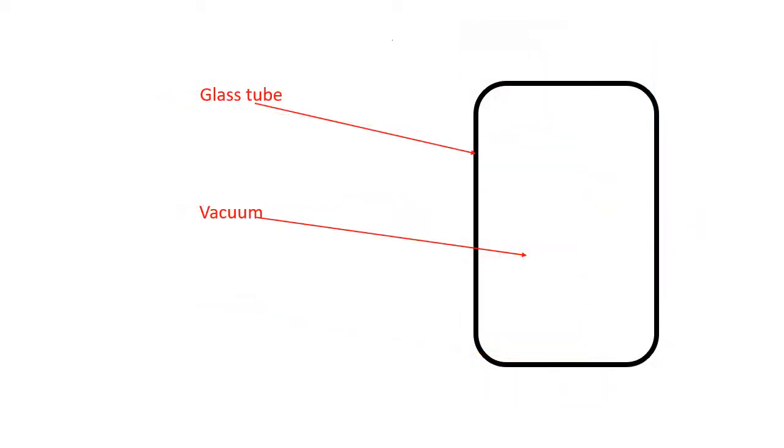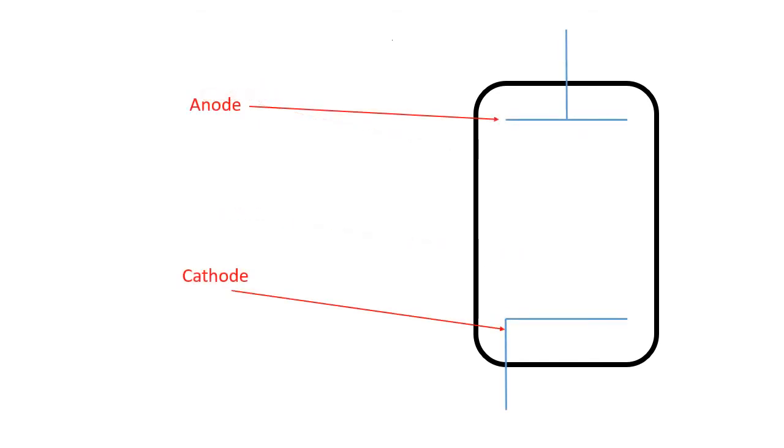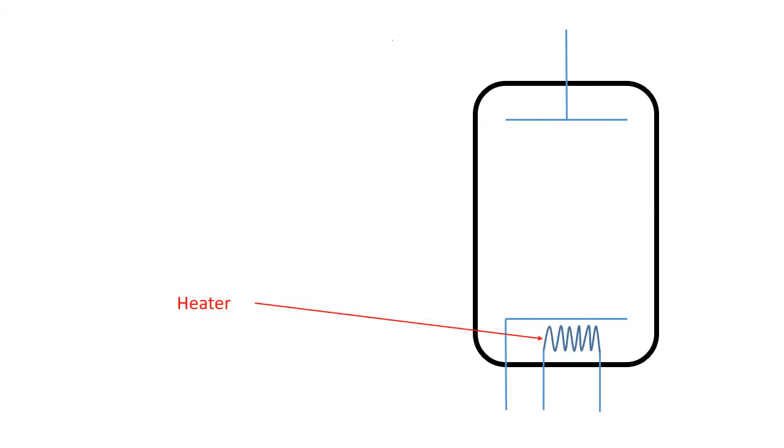A valve consists of a glass container from which the air has been evacuated so that it contains a vacuum. There are two metal plates inside the glass tube connected to the outside. These are called the anode and the cathode. A filament wire, similar to that in a light bulb, is fitted close to the cathode, and this is called the heater.